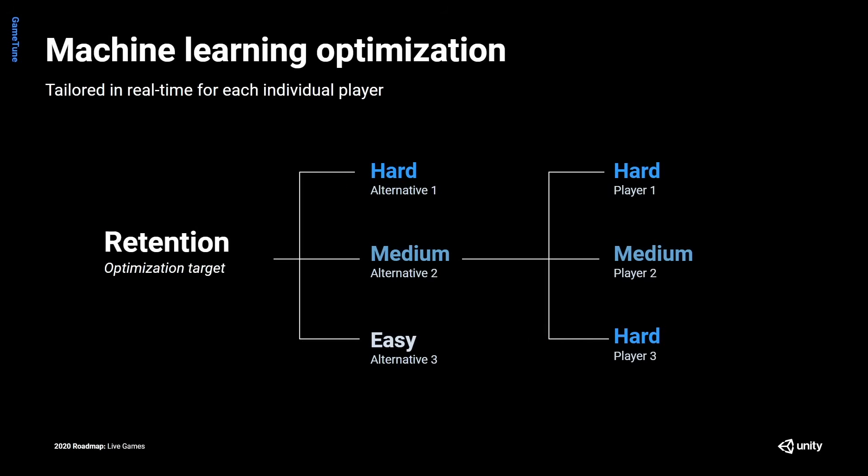How does this work in practice? We're trying to optimize for a particular goal — most of the time that's retention; we want people to hang around longer. For example, maybe we have three different difficulty options: easy, medium, and hard. GameTune can assign the correct difficulty to the right player. Player one really likes hard games and has a lot of experience, so they get hard difficulty. Player two used to play these kinds of games but doesn't anymore, so they get medium difficulty. Player three is a great gamer, so they get hard difficulty. Everyone gets the difficulty that matches them perfectly and gives them the best experience and challenge.